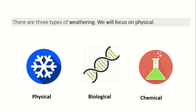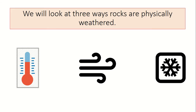Over the next couple of years we're going to look at lots of different types of weathering. For example, when you get into Year 8 we will be looking at biological and chemical weathering along the coastline. But for today we're just going to focus on something called physical weathering. Within physical weathering, we're going to address three main ways in which rocks on our planet are physically weathered — by temperature changes, the wind, and something called freeze-thaw weathering.